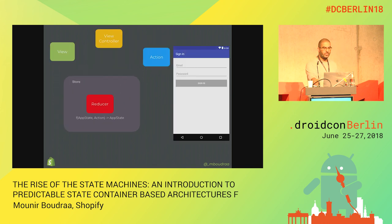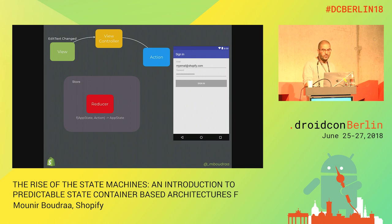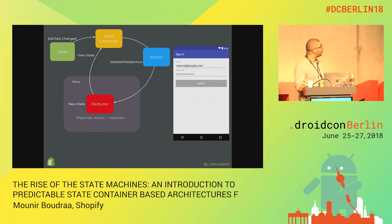So let's go back. Here is the screen - we have the user starting to type something. Then we have a user action, then we go to the view controller. The view controller creates the action - validateFieldsAction. That action is passed to the reducer. The reducer computes a new state, which is basically that the button will activate now. This is given back to the view controller and to the view, and the view is rendered.